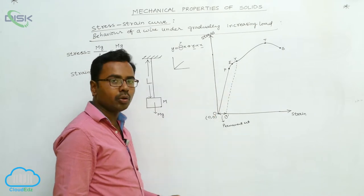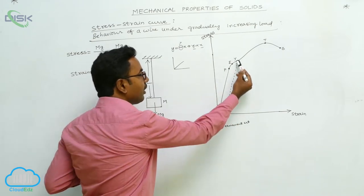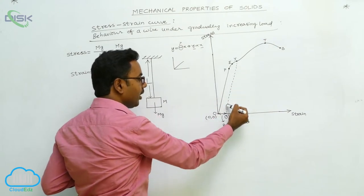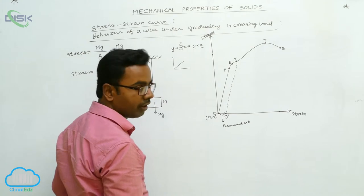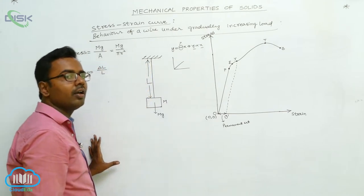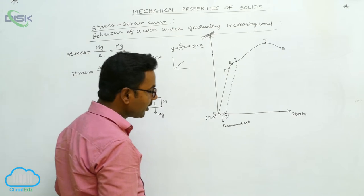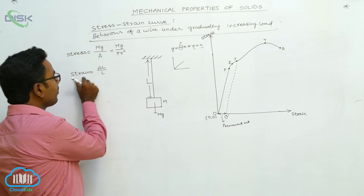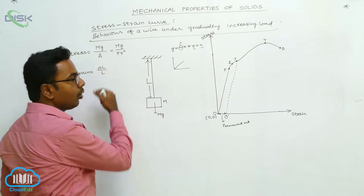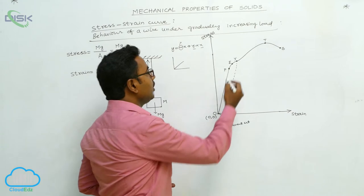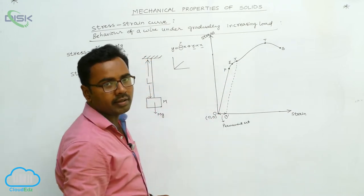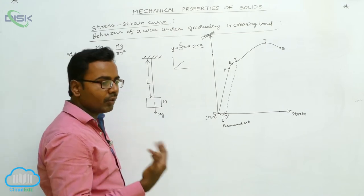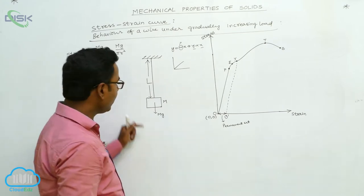At point Y, if we remove the load, the graph cannot come back along Y-E-P-O but comes back along a different line and intersects the strain axis at point O dash. O-O dash is called the permanent set, which equals permanent increase in length divided by original length. At point Y, yielding starts and the wire flows like a viscous liquid, becoming thinner and thinner at the same load.